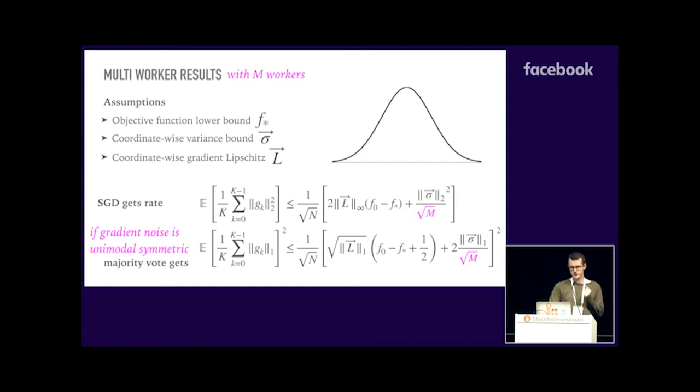We should have two questions now. Are the gradients dense? Because then SignSGD will be relevant. And is the noise unimodal symmetric, for example Gaussian? Because then majority vote will be relevant. Let's look at these questions empirically.